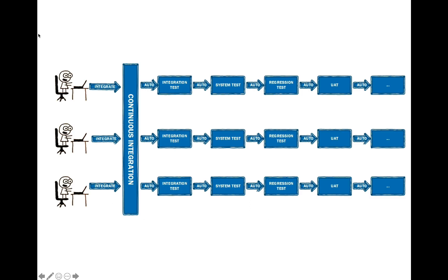Here's a diagram showing how this continuous integration process works. You have developers on the left side working on code on their local workstations, and they're writing unit tests. They will then continuously integrate that code in the version control system, committing their code and merging it into a mainline branch. All the developers are constantly integrating their code with one another and all pushing code to the same branch.